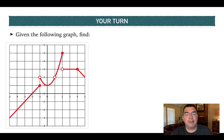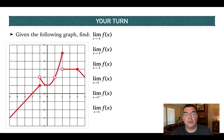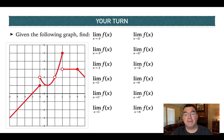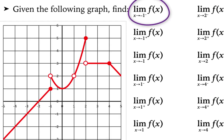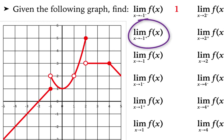Now I'm going to give you some limits to find based on just a graph — no explicit function stated. We're going to evaluate these 12 limits by looking at the graph. The first asks what happens to the y values as x approaches negative 1 from the left: the y values seem to approach 1. Approaching negative 1 from the right, indicated by the plus sign, the y values approach 2. Since the y values are approaching two different numbers, the limit does not exist.